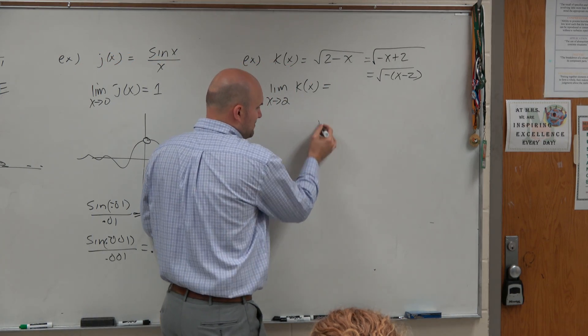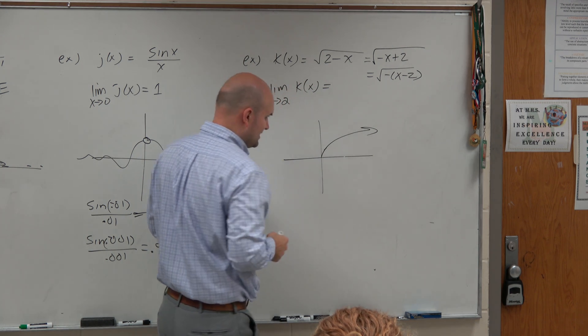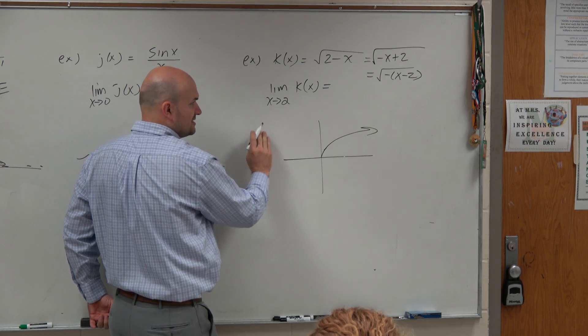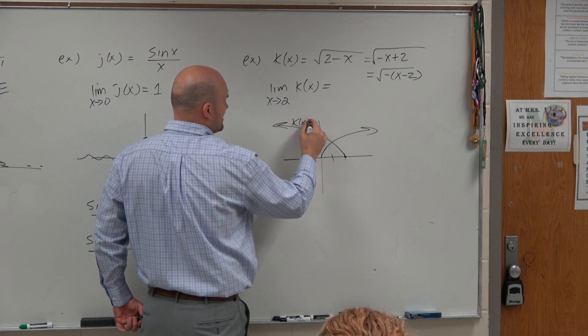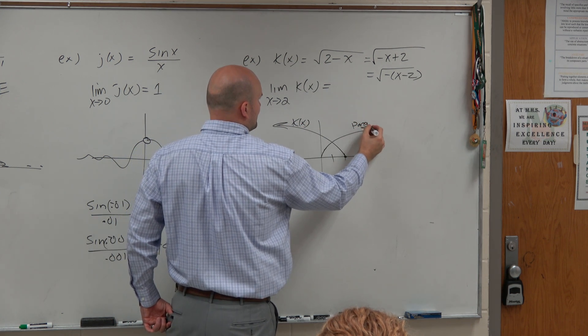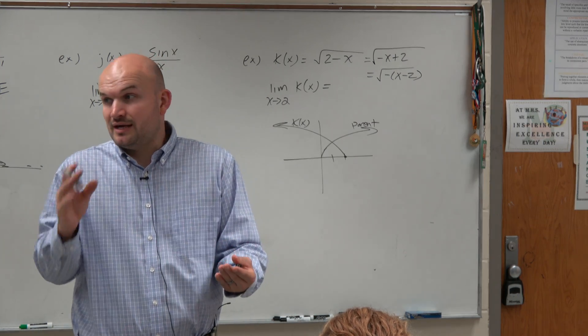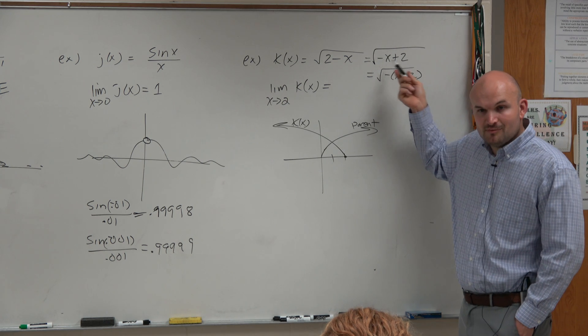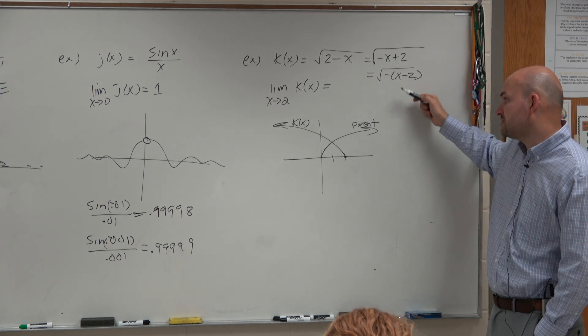So what's really happening here is my original parent graph, that looked once like that, is now being reflected about the y-axis and shifted two units to the right. So that is what k of x looks like. That is the parent graph, right? That's why b stinks. b has messed everything up. It's not being shifted two units to the left, because b is in there. b reflected it, right? So you've got to factor out the b to see what's going on.